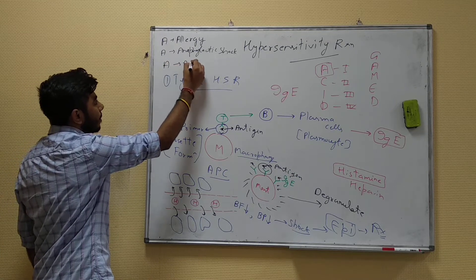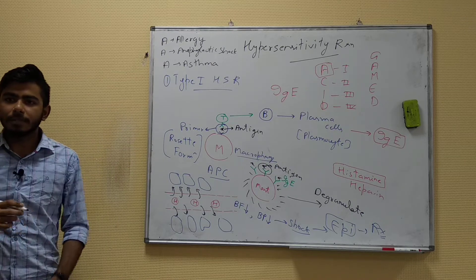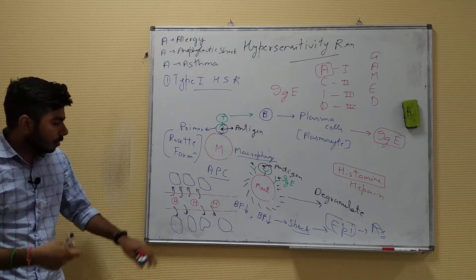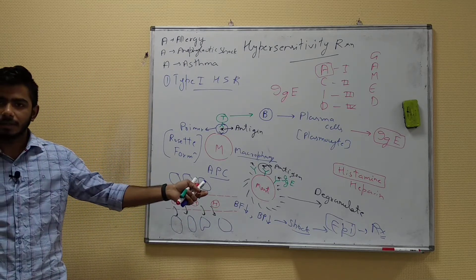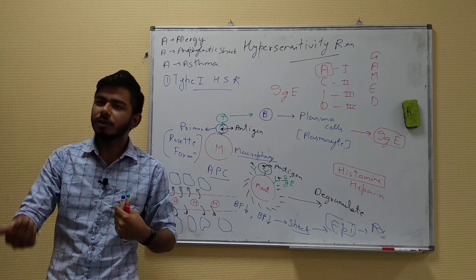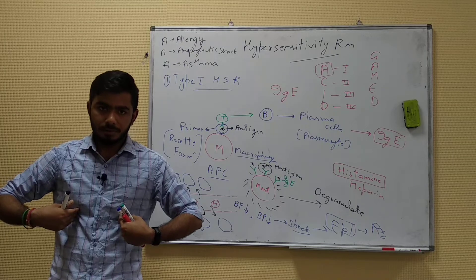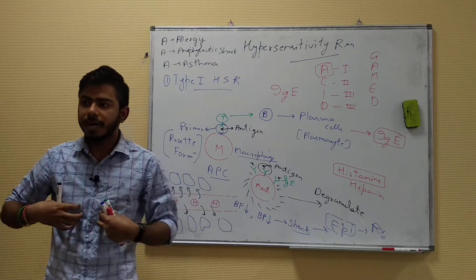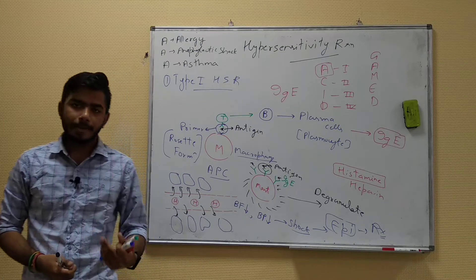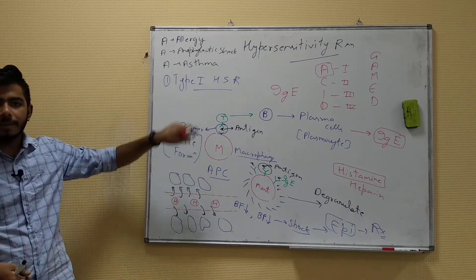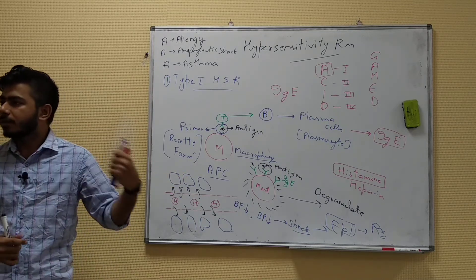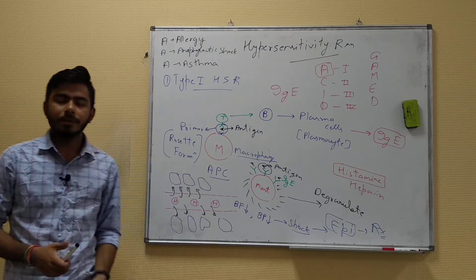Asthma is also a type 1 hypersensitivity example. In bronchial asthma, fluid leaking out of blood vessels causes bronchoconstriction. When bronchoconstriction occurs, oxygen cannot enter the lungs properly, and CO2 gets trapped — causing hypercapnia and respiratory acidosis. That concludes type 1 hypersensitivity. Now let's move on to type 2 hypersensitivity.